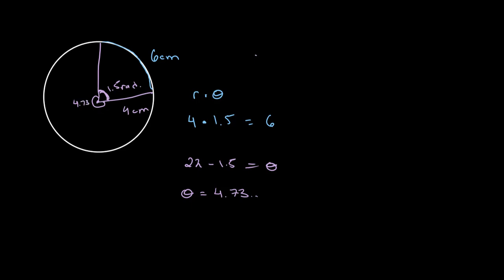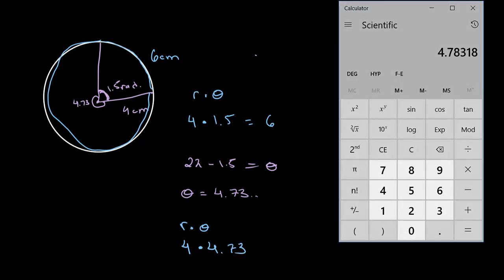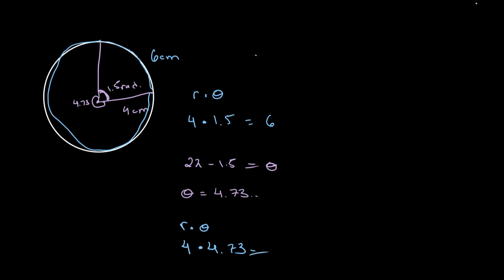Now our arc length is equal to r times theta. Once again, r is 4 and our newly derived theta is 4.73. Let's plug this in—we multiply the value for theta by 4 and we get 19.13272. That gives us the value of our arc length, which is about 19 centimeters.